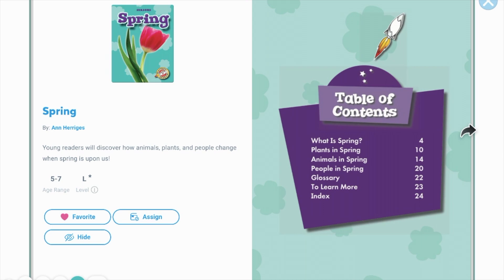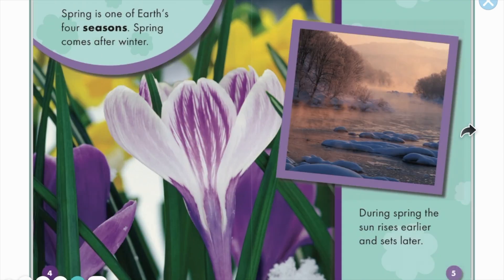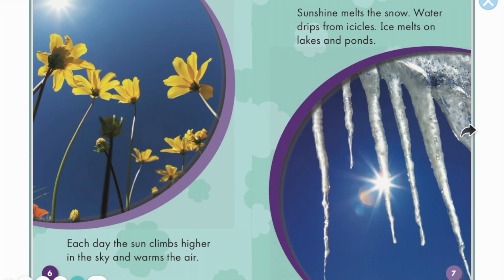Spring is one of Earth's four seasons. Spring comes after winter. During spring, the Sun rises earlier and sets later each day. The Sun climbs higher in the sky and warms the air.